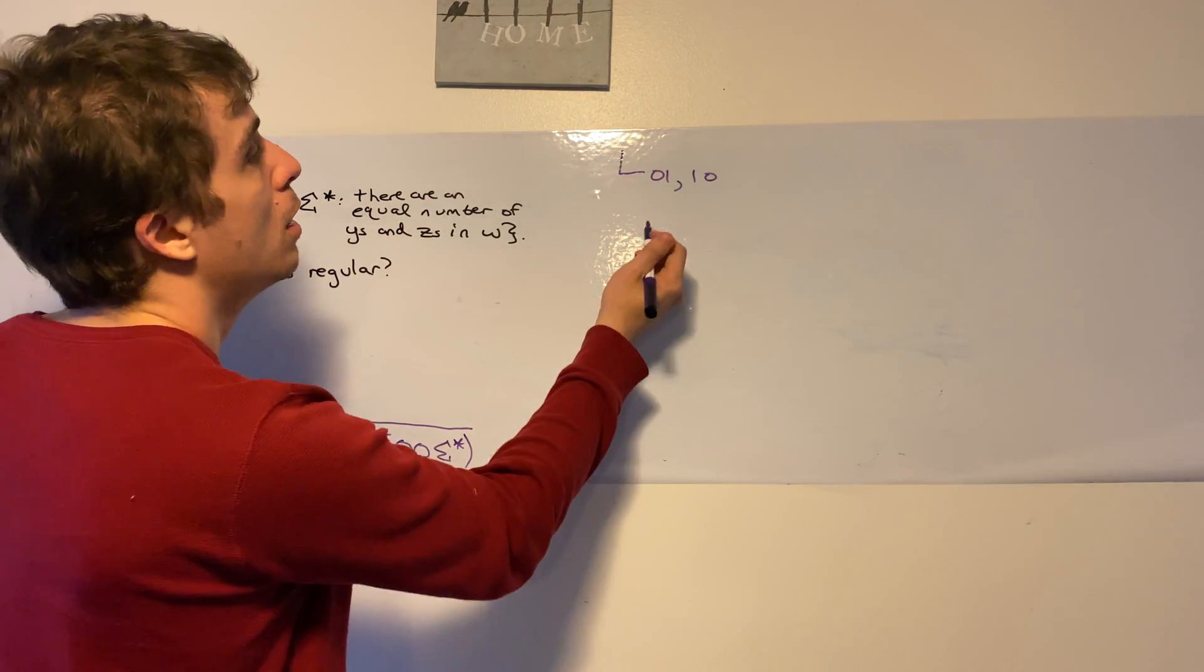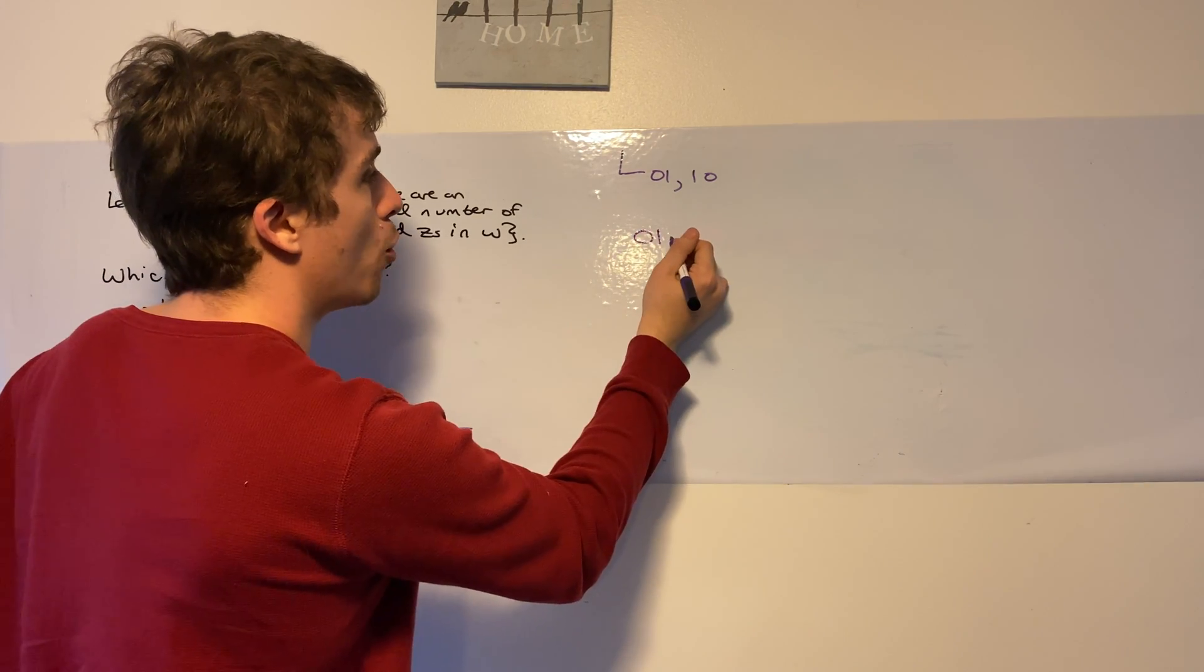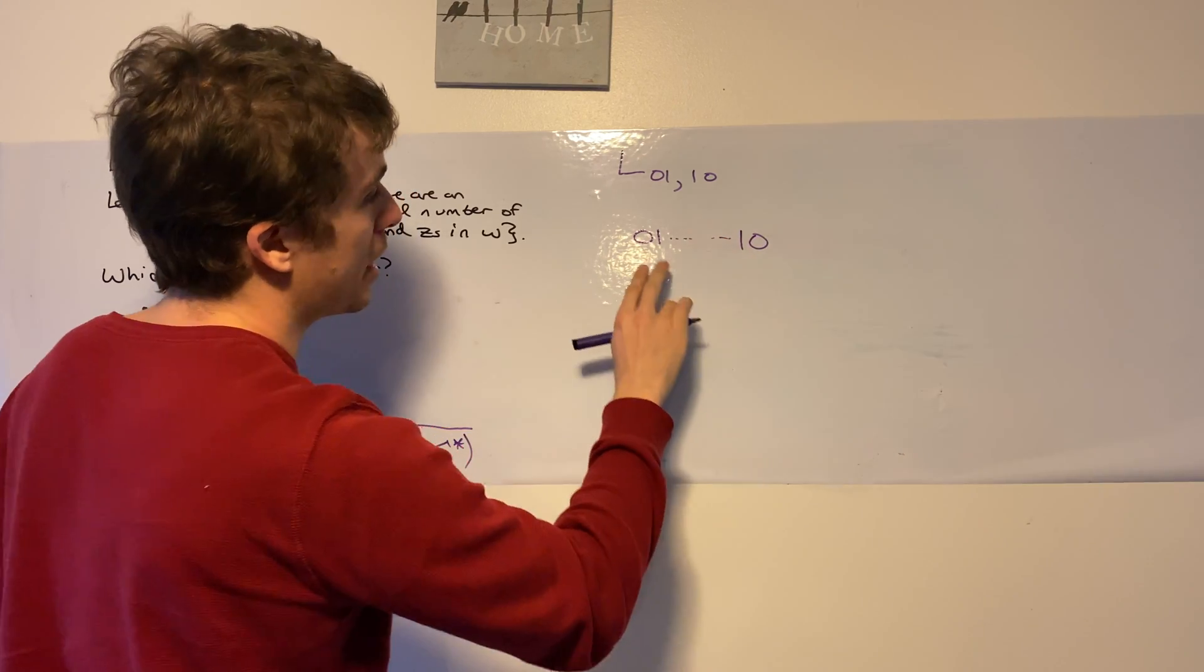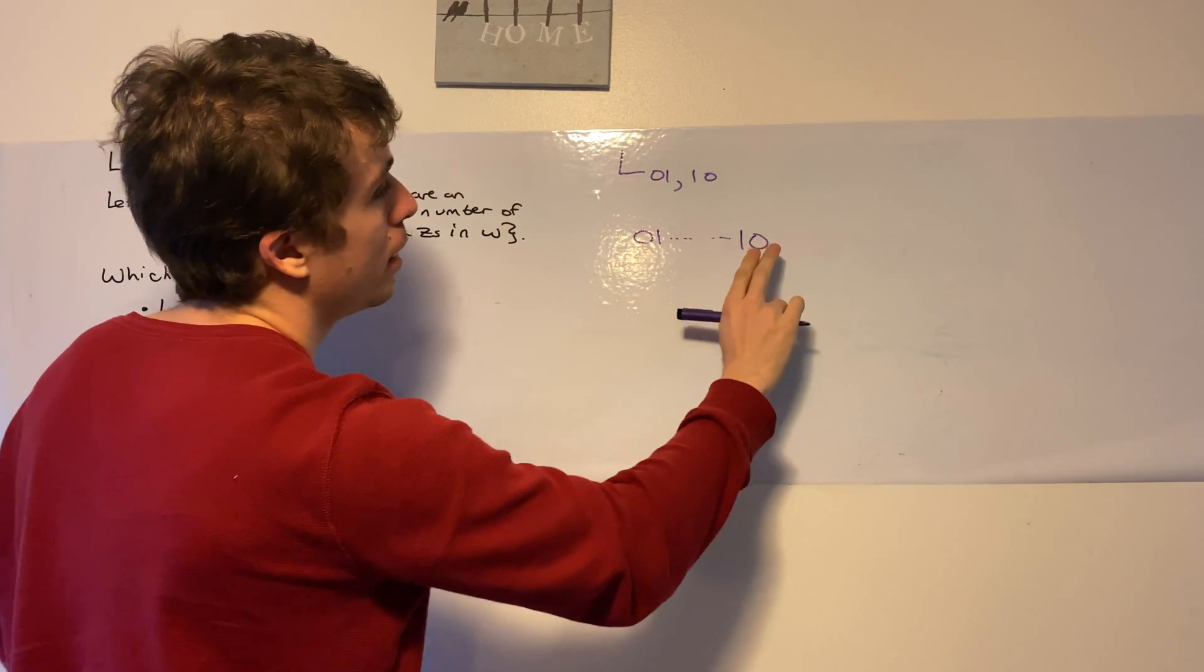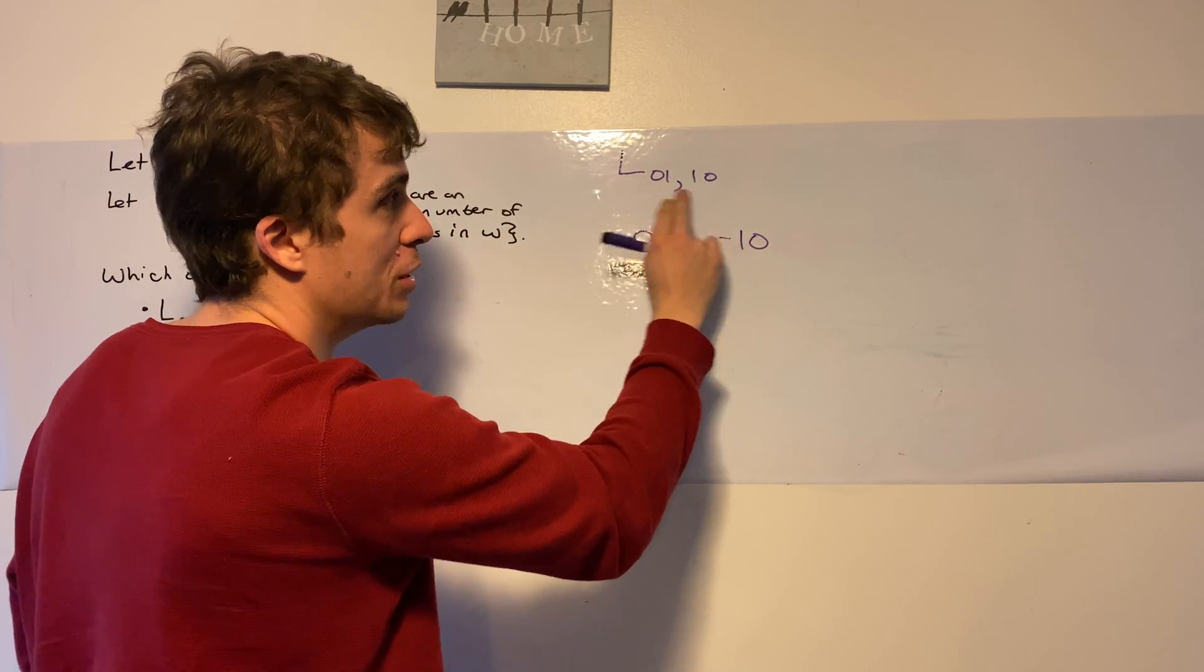If we see a 0, 1 somewhere, at some point, we're going to have to see another 0. Because if I see a 0, 1 here, I must see a 1, 0 at some point because I have the same number of 0, 1s and 1, 0s.